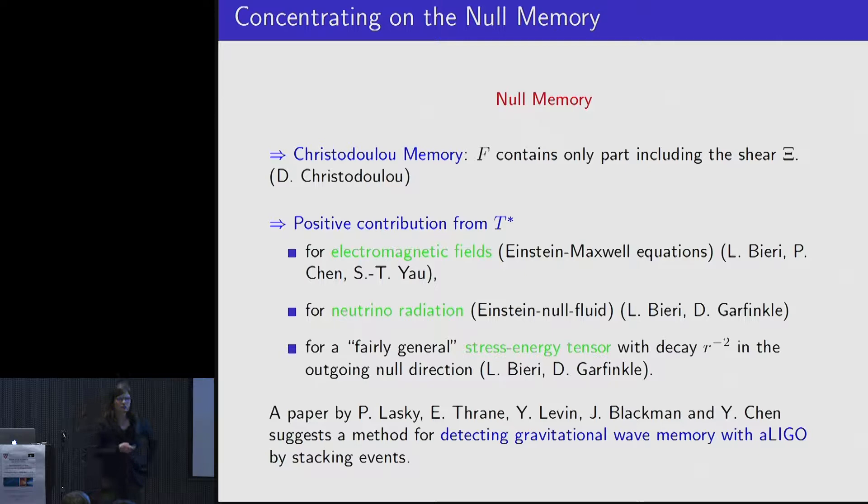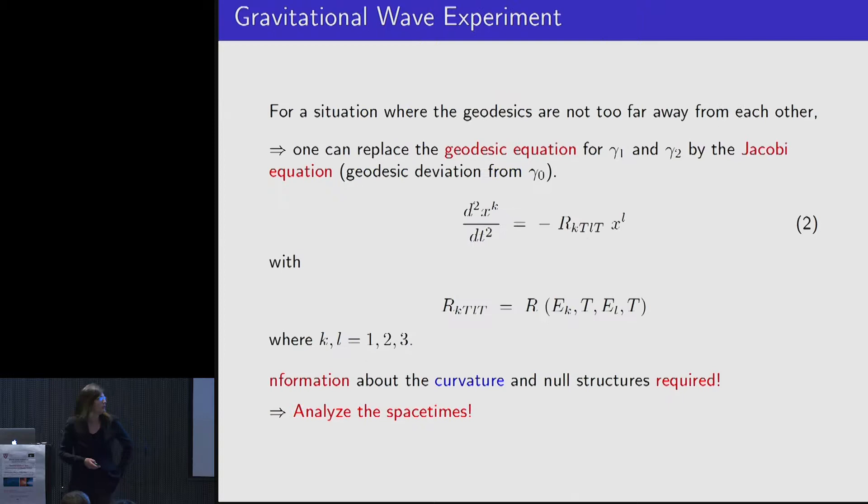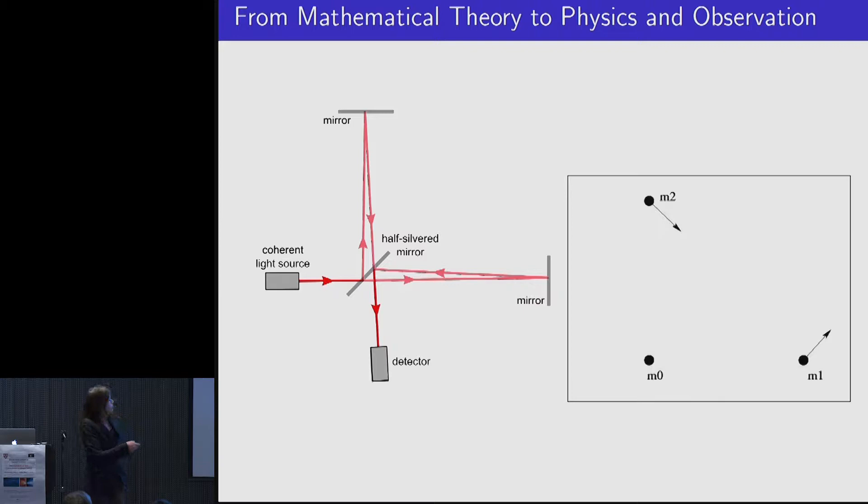Interestingly, I would like to point out the Lasky-Thrane-Lavin-Blackman-Chen paper, they suggested that with stacking events, one should actually be able to observe the memory with LIGO at some point. Maybe back to the basics. When I want to measure geodesic motion, or what we do measuring when we see gravitational waves, we can measure here an acceleration-based on the left-hand side and have the curvature on the right-hand side. How we get information about this curvature can be by studying and investigating the spacetimes or approximating solutions, numerical studies, but we need to know something about the right-hand side. This will be a permanent displacement that should occur in any such detector.